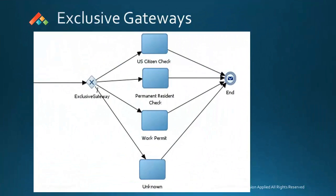Let's look at exclusive gateways first. An exclusive gateway can be set up with many possible paths that the process token can fork into. But when it executes, the process token will fork into just one of those possible paths.